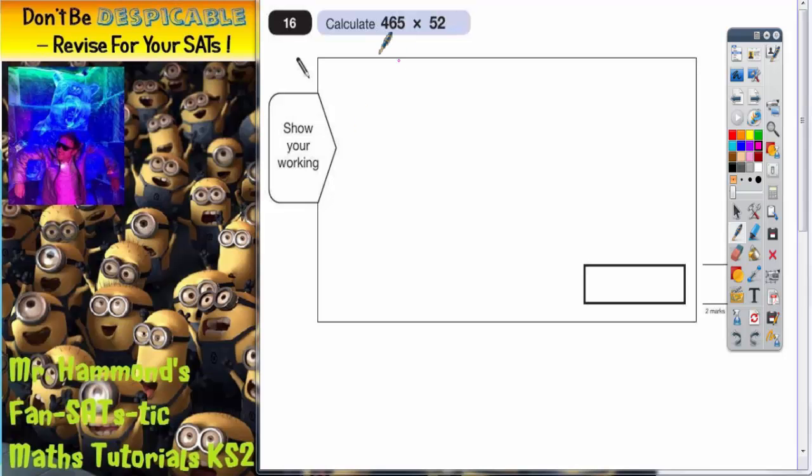Question 16. Calculate 465 multiplied by 52. Now this is going to be a long multiplication question. There's a couple of ways you can do this, a couple of different methods you might have learned.